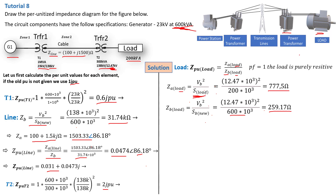Now we have all elements needed to calculate Z per unit of the load. Replacing in the formula: Z per unit of the load equals Z actual divided by Z base, which gives us 3 per unit. You just have to follow the procedures and remember your formulas. To summarize: the generator is 1 per unit, transformer one is 0.6, the transmission line is 0.031 + j0.0473, transformer two is 2 per unit, and the load is 3 per unit.